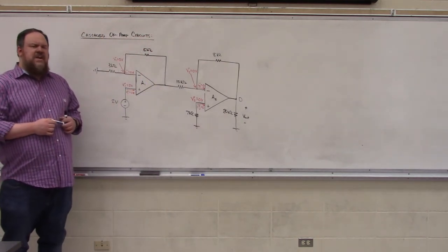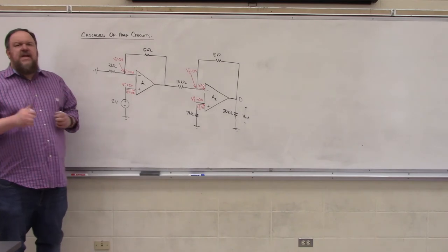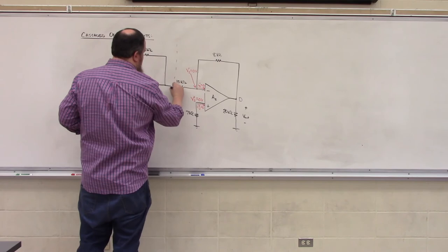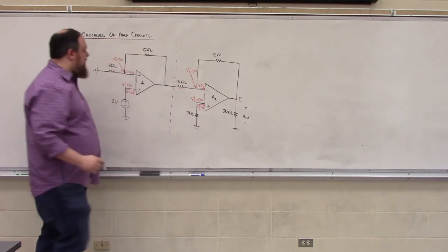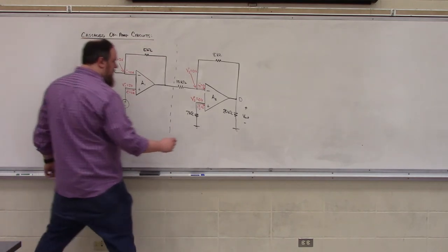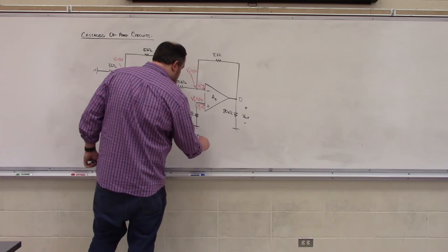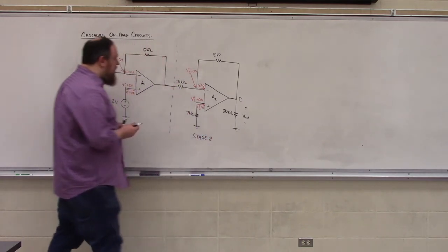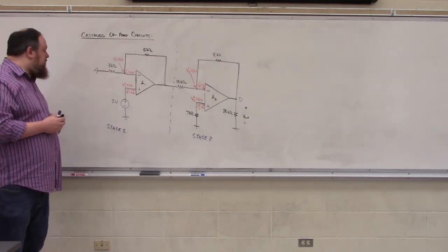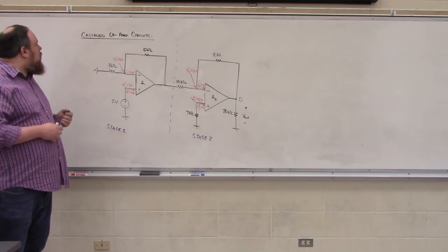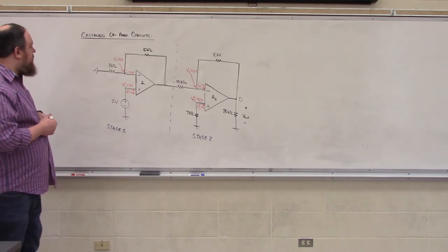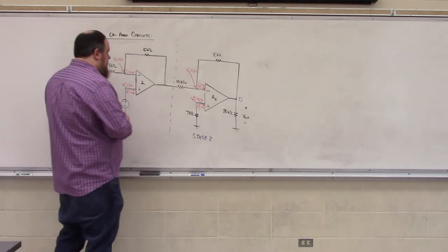Our second method for analyzing cascaded op amp circuits is to divide them up into stages. So I'm going to have this purple line which separates amplifier stage 1 from amplifier stage 2. Now, if we were completely ignoring amplifier stage 2 and simply looking at what's going on in amplifier stage 1, we should easily be able to determine that stage 1 is a simple non-inverting amplifier.